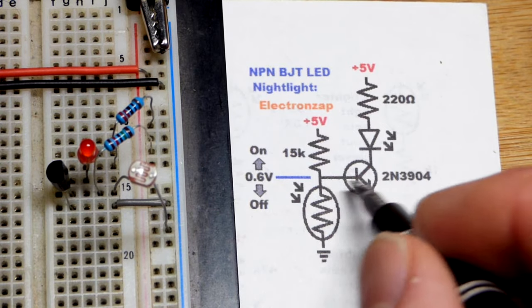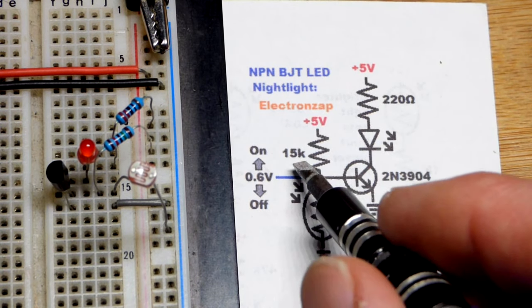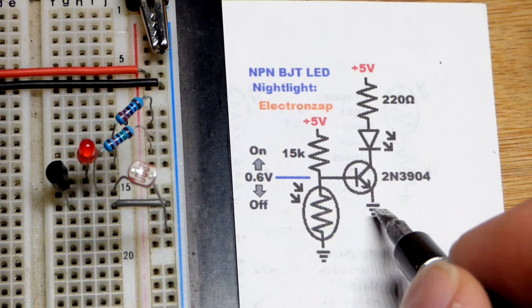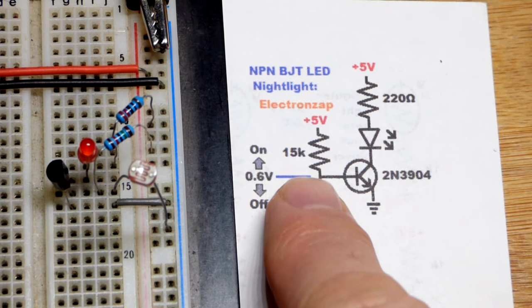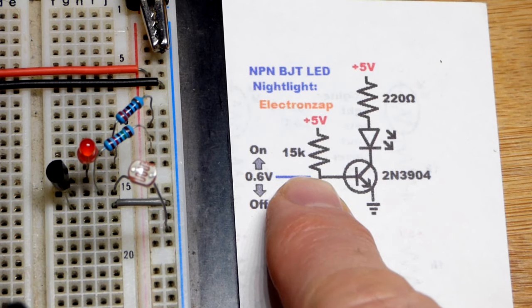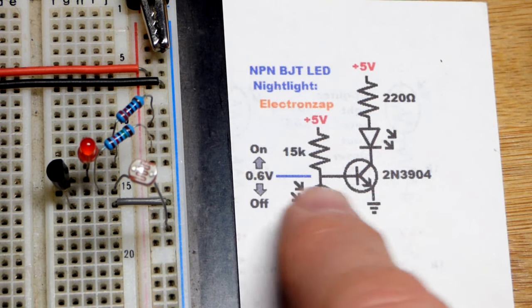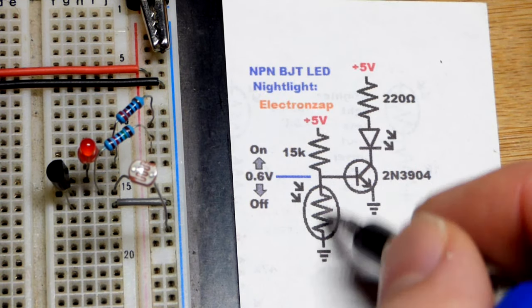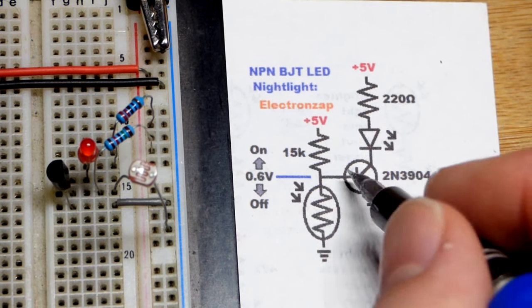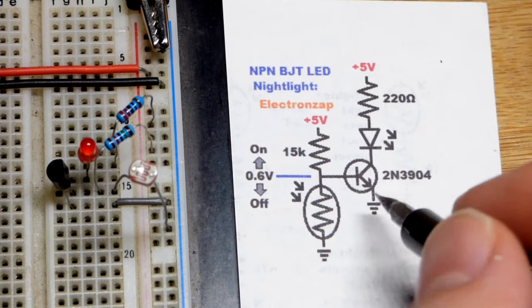We can accept any leakage current this is going to ask for. The 15k should turn it on fully when it's dark enough because it's like this doesn't exist anymore. When it's dark we got a straight current path. When this is conducting good enough because there's enough light, it pulls the voltage to ground and there's less than 0.6 volt difference and it turns the transistor off.